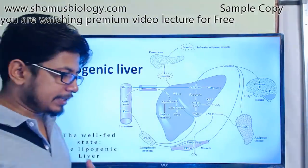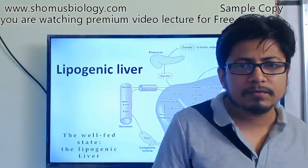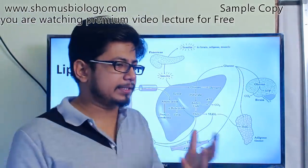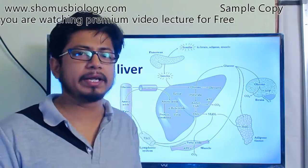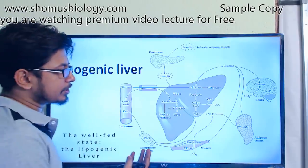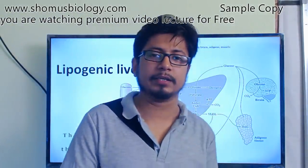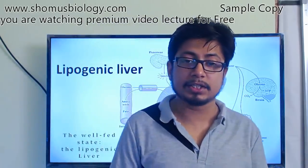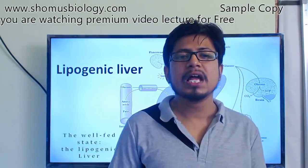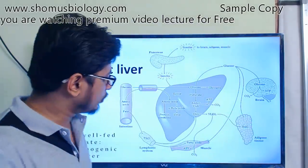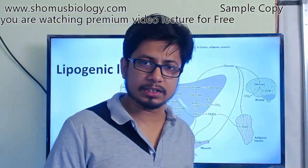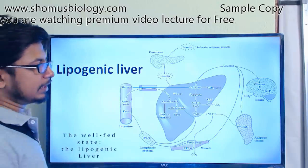In our body there are different organs and systems. Among these, the liver plays the most important role — you can call it the brain and heart of the whole metabolic pathway. The liver makes the decision of either utilizing available resources to generate energy, or converting and storing those resources for future use. When we are well-fed, all nutrients from digestion are present in the bloodstream — this is the lipogenic phase of the liver.